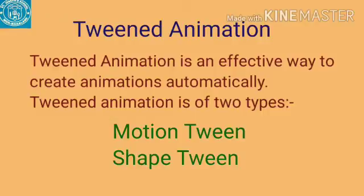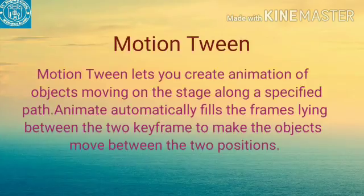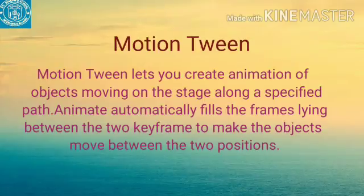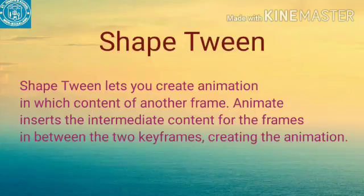Tween animation is an effective way to create animations automatically. Tween animation is of two types: Motion Tween and Shape Tween. Motion Tween lets you create animation of objects moving on the stage along a specified path. Animate automatically fills the frames lying between the two keyframes to make the objects move between the two positions. Shape Tween lets you create animation in which the content morphs from one shape to another. Animate inserts the animated content for the frames in between the two keyframes, creating the animation.